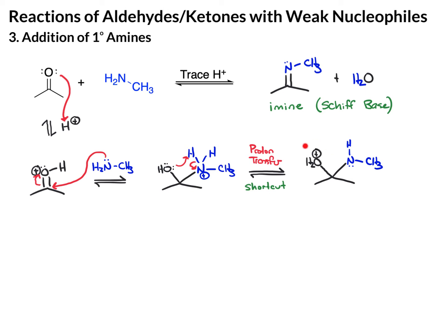Now we have water as a leaving group, and on the carbon next to that we have the nitrogen, which has a lone pair. So what we're going to do is push this lone pair down, and that will assist in water departing. Here's where we lose H2O. We end up with the double bond to the nitrogen, but at this point it still has the methyl group and the proton. This is considered an iminium ion.